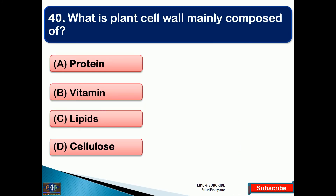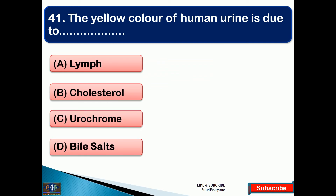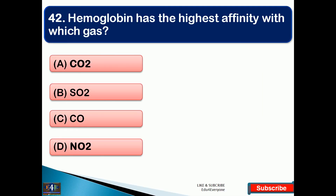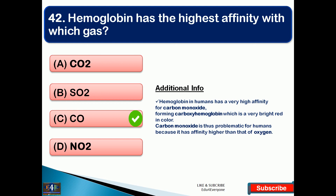What is the plant cell wall mainly composed of? The right answer is option D, that is cellulose. The yellow color of human urine is due to — the right answer is option C, that is urochrome. Next question: hemoglobin has the highest affinity with which gas? The right answer is option C, that is carbon monoxide. Hemoglobin in humans has a very high affinity for carbon monoxide, forming carboxyhemoglobin, which is a very bright red in color.